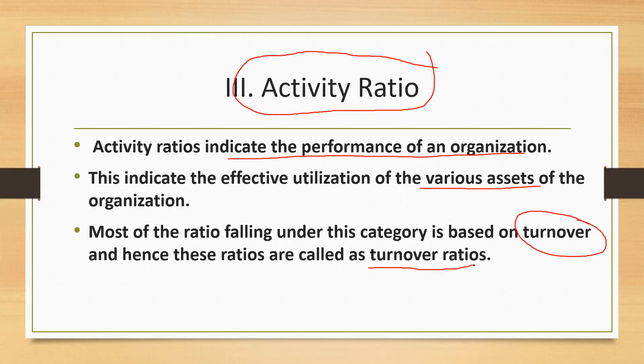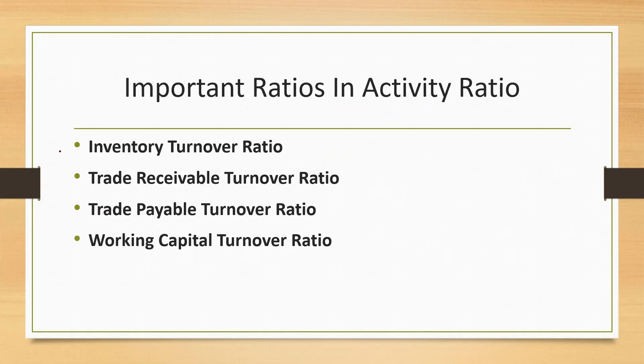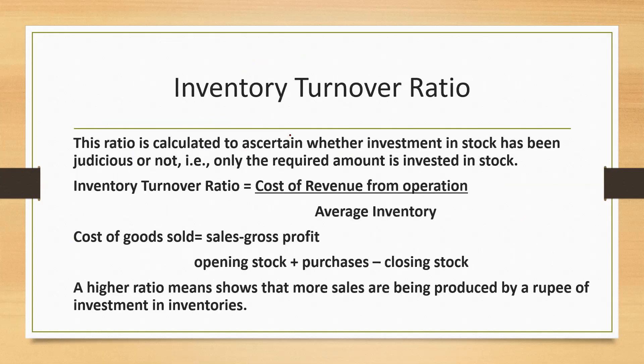Let us see various types of activity ratio. There are four types of activity ratio: inventory turnover ratio, trade receivable turnover ratio, trade payable turnover ratio, and working capital turnover ratio. Today we are going to start with inventory turnover ratio.